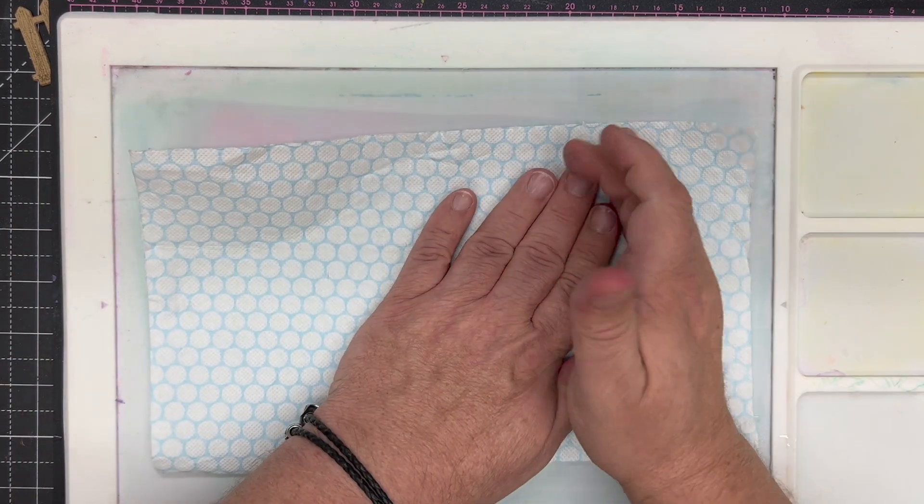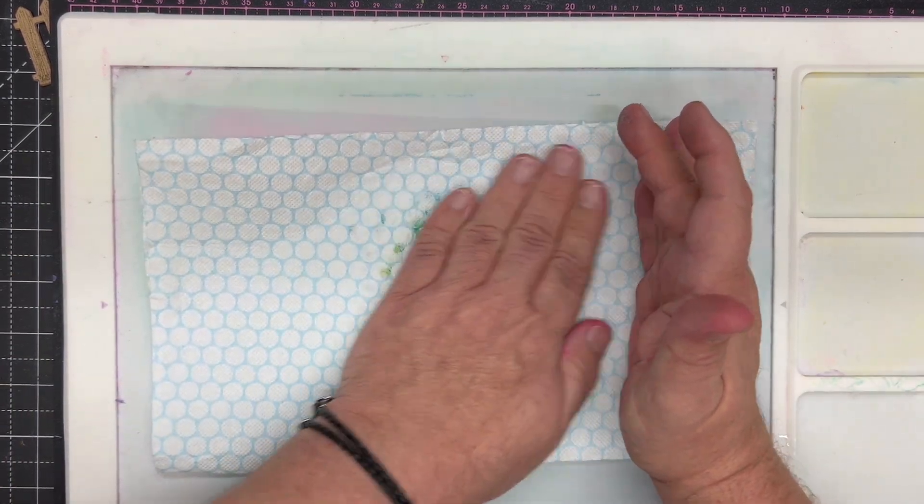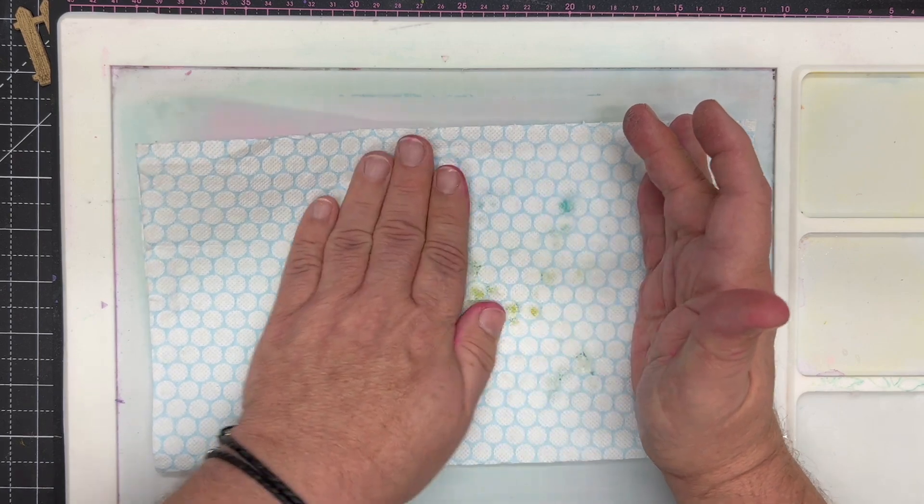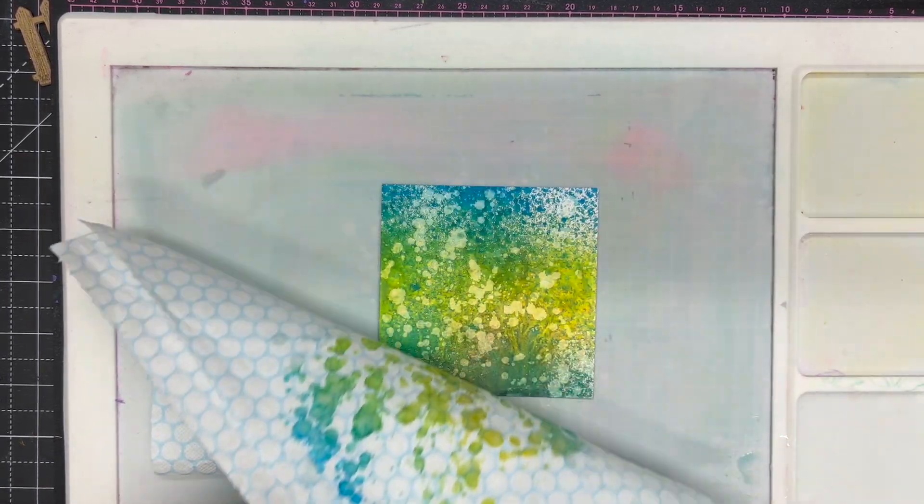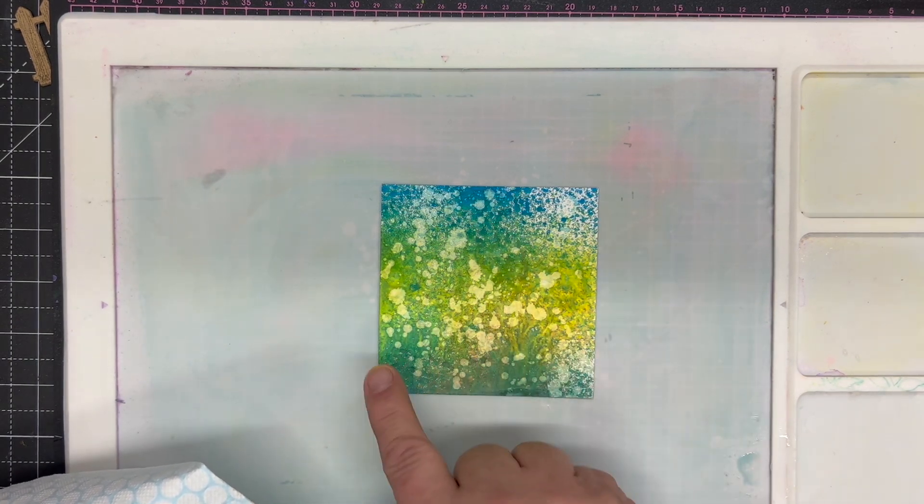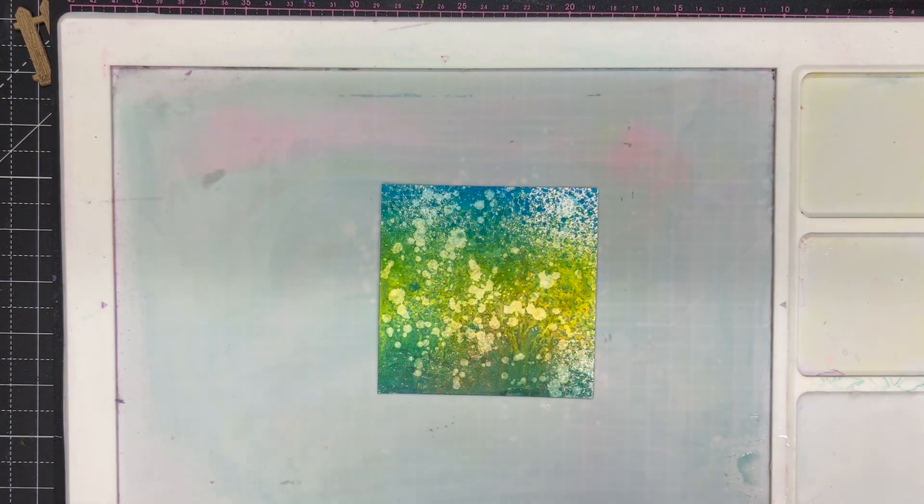So once you're happy that that's started to activate, you see the colors, take a piece of kitchen roll or a cloth and just put it over the top. And that will then give you all the beautiful white spots as if it's raining.